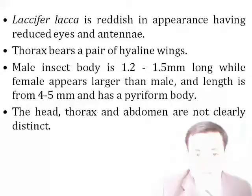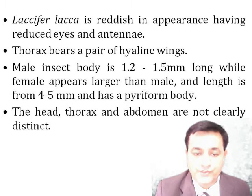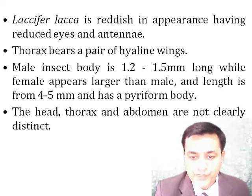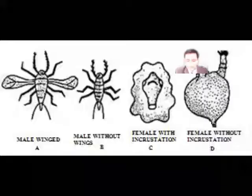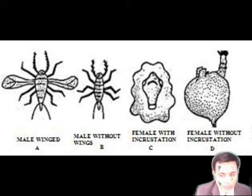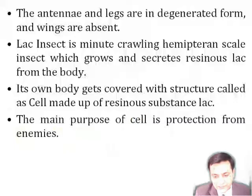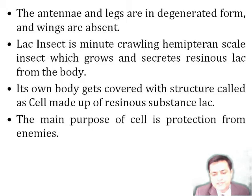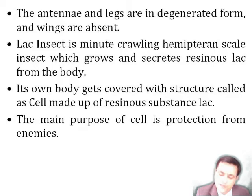The lac insect has a reddish appearance with reduced eyes and antennae. The thorax bears a pair of hyaline wings. The male is smaller in length compared to the female. The female has a pear-shaped body; body divisions of head, thorax, and abdomen are not clearly distinct, and antennae and legs are reduced or degenerated, with wings absent. The lac insect is a minute, crawling, hemipterous scale insect which grows and secretes resinous lac from the body. Its body gets covered with a structure called a cell, which is made up of resinous secretion called lac. The main purpose of the cell is protection.